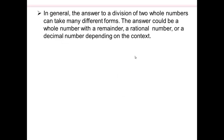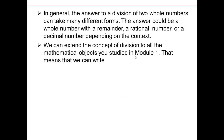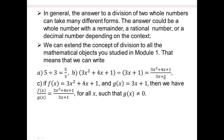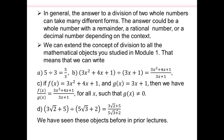In general, the answer to a division of two whole numbers can take many different forms depending on the context. We can extend the concept of division to all objects studied in module 1. For example: 5 divided by 3, or 5 thirds; a polynomial divided by another polynomial giving a quotient — rational expressions; two functions f and g giving f(x) over g(x), where g(x) must not be 0; and two radical expressions divided giving a quotient. In some sense, you've already been working with division when working with fractions.